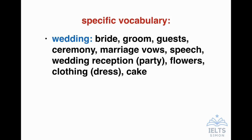It's good to prepare some specific vocabulary for those four main types of event. For example, if you're preparing wedding vocabulary, you're going to have words like the bride and the groom — that's the female and male who are getting married — the guests, the ceremony, the marriage vows. Those are the things the couple has to say when getting married. The speech — maybe someone in the family made a speech at the wedding. We don't say a wedding party; we say a wedding reception after the ceremony. You could talk about the flowers, the clothing, the bride's dress, the cake.